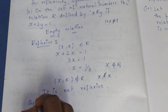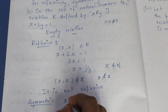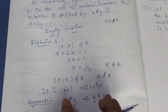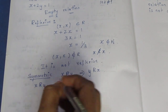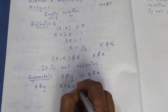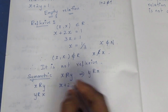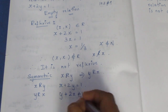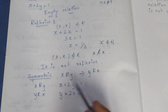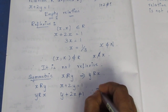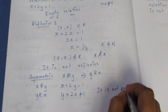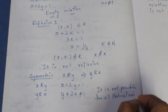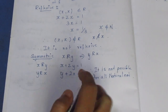Next is symmetric. For symmetry, if x is related to y, we check if y is related to x. That means y plus 2x equals 1. This equation is not possible for any natural number values. Therefore the relation is not symmetric.